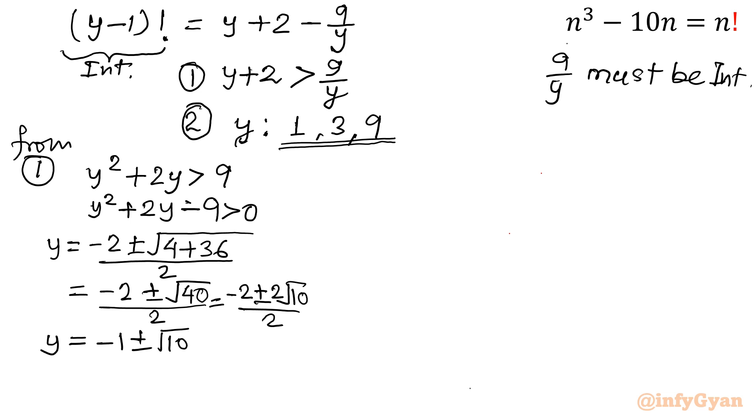Now y cannot be negative. So there are two values. -1 + √10 and -1 - √10. So which value I will reject? That is the negative. It is not possible. So we will reject this value. This value we will accept.